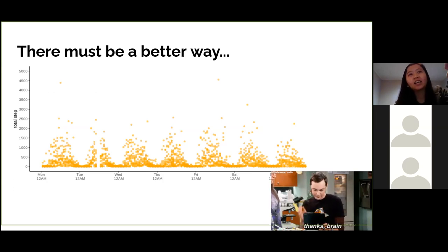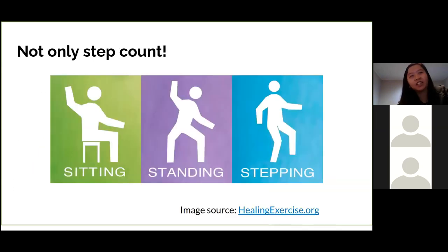Anyway, if we use a more sophisticated device, we can also identify whether someone is sitting, standing, or stepping based on their posture. And the data is also in time series format. So that means we can identify the sequence of their activities and create a plot like this.